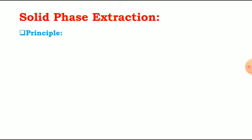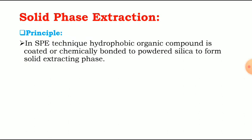Normally in solvent extraction there is no solid phase — only liquid phases are used. But in solid phase extraction (SPE), we use a solid stationary phase. In SPE, a hydrophobic organic compound is coated or chemically bonded to powdered silica to form the solid extracting phase.